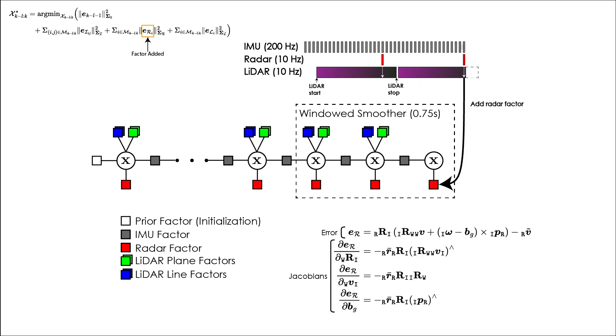Linear velocity is then estimated from the radar point cloud's Doppler velocity measurements using RANSAC for outlier rejection. This velocity is used to create a velocity factor which is then added to the created state.